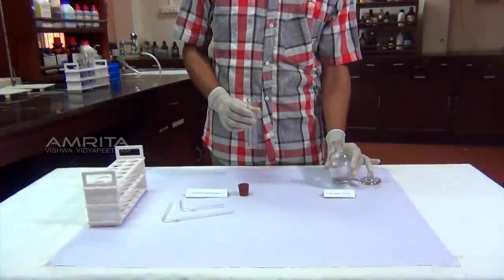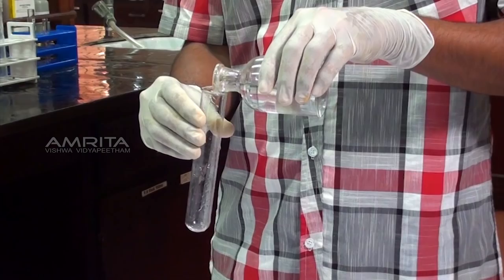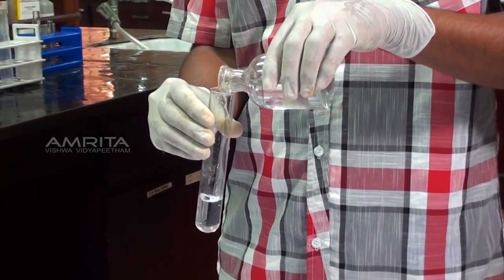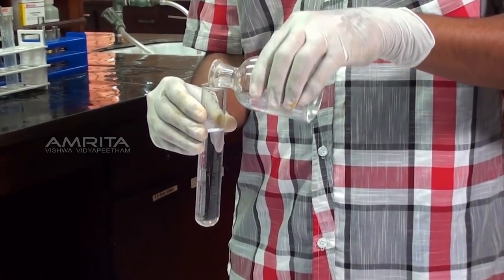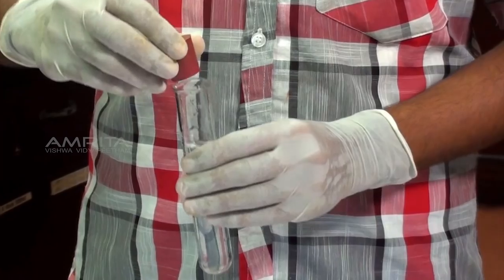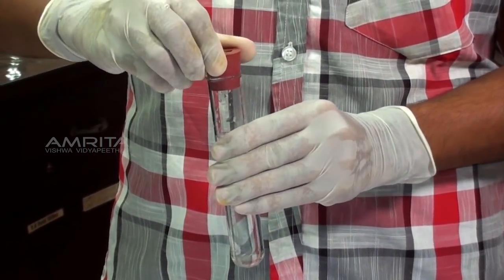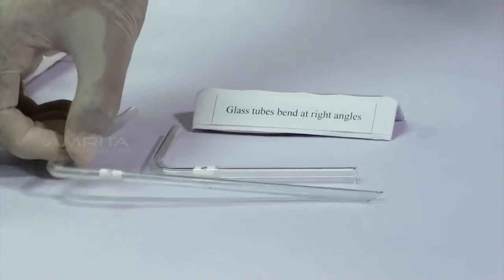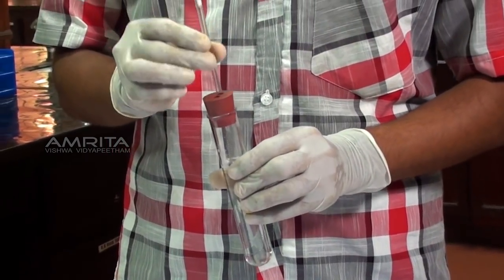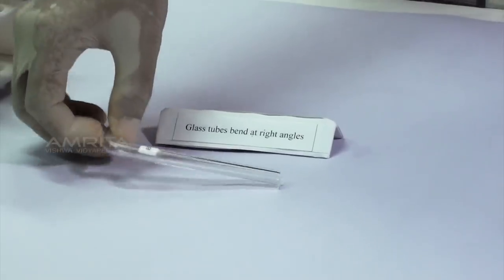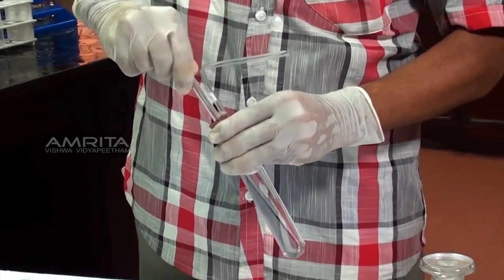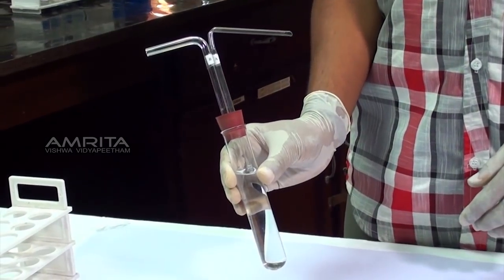Procedure: Pour freshly prepared lime water into the boiling tube so that it is three-fourth full. Take a cork with two holes and fix it into the mouth of the boiling tube. Insert the glass tubes, let us name them A and B, into the boiling tube through the cork so that the end of glass tube A dips in the lime water.